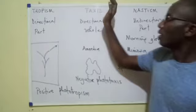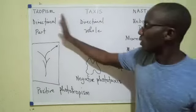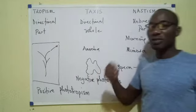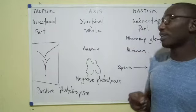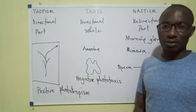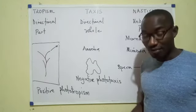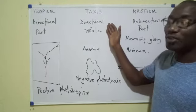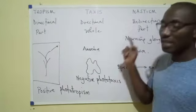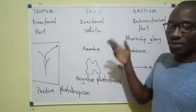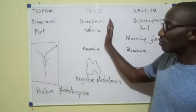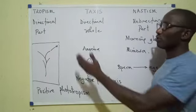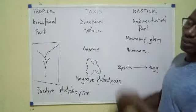In summary: tropism and taxis are directional; nasticism is non-directional. Tropism and nasticism involve parts of the organism, while taxis involves the whole organism. A useful clue is that taxis occurs in animals, because it is only in animals that the whole organism can move. In a plant, the whole cannot move, so taxis is exclusively for animals. The other two can be found in plants, though animals can also exhibit them to some extent.